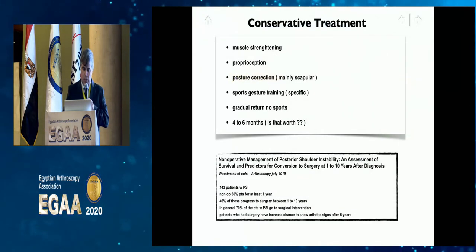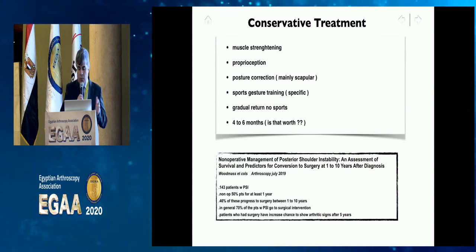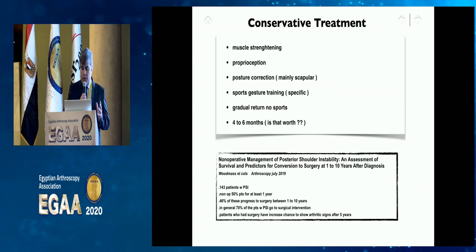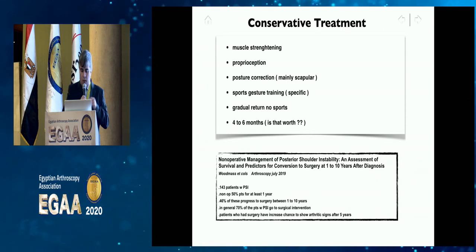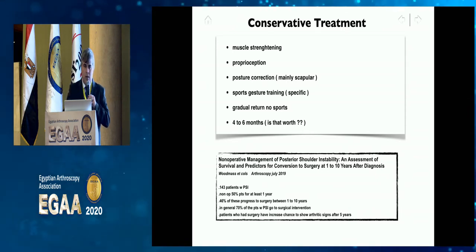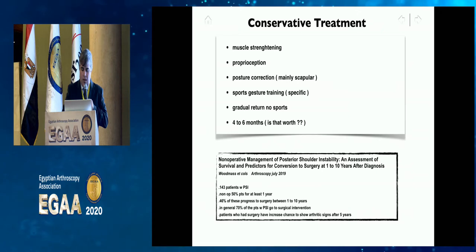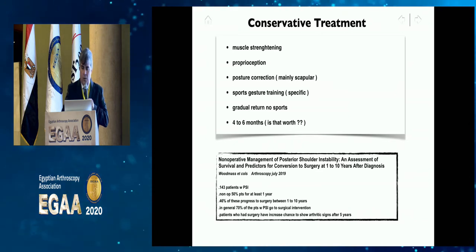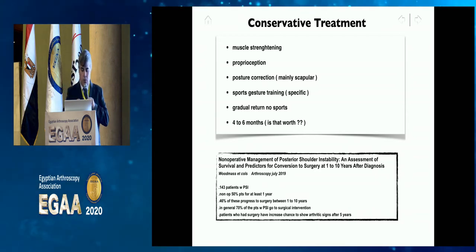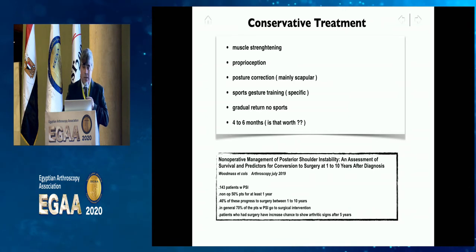In my practice, these cases always go first for conservative treatment: muscle strengthening, proprioception, posture correction, and sport-specific training, with gradual return to sport over four to six months. However, a 2019 paper by Woodmass shows that 46 percent of these patients progress to surgery within one to ten years, and in general 70 percent of patients with posterior shoulder instability will eventually require surgical treatment.